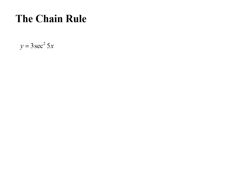The second problem is y equals 3 secant squared 5x. We'll write it with more parentheses. Remember, when you see a secant squared, it really means the secant of that thing, squared. Then put parentheses around the argument, and now we're going to take the derivative.